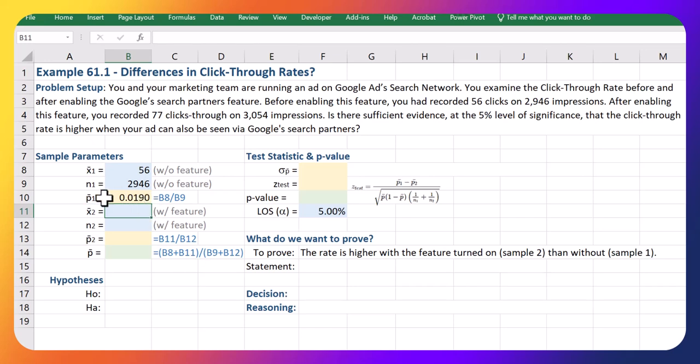Now, after the feature is enabled, we see there are 77 clicks through for a total of 3,054 times that this ad is shown, or 3,054 impressions.